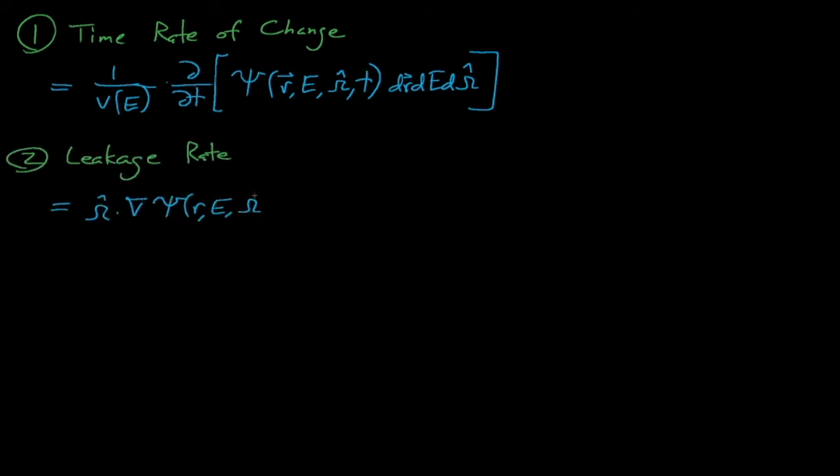Mathematically, the neutron leakage depends on the net current that flows out of some area, some dA, that encloses a volume, but in general we prefer not to do surface integrals. So what we'll do is use Gauss's law to convert this angular current integral into omega dot the gradient of ψ.